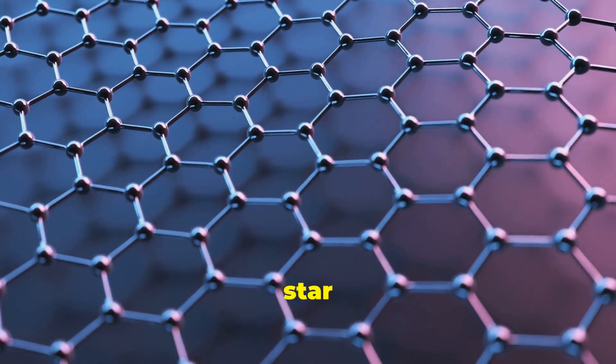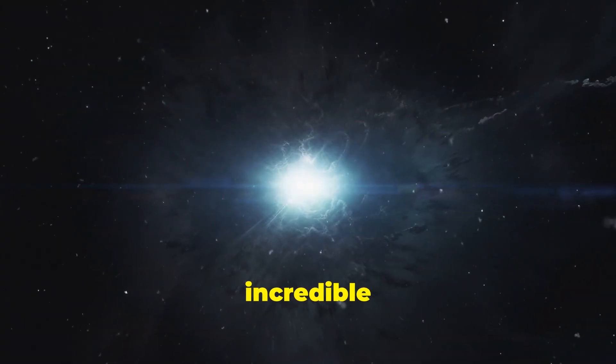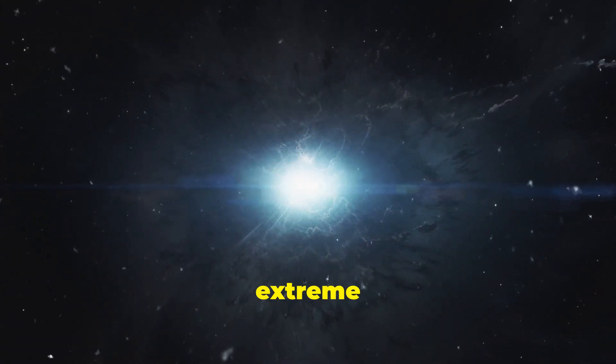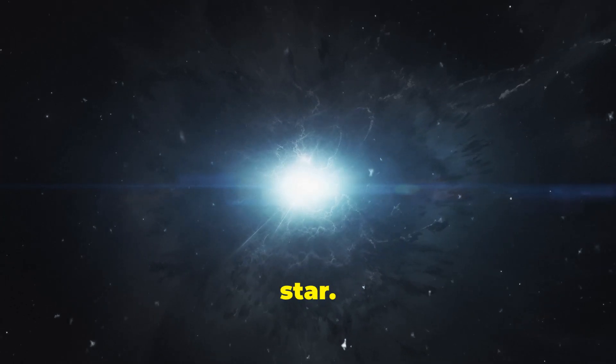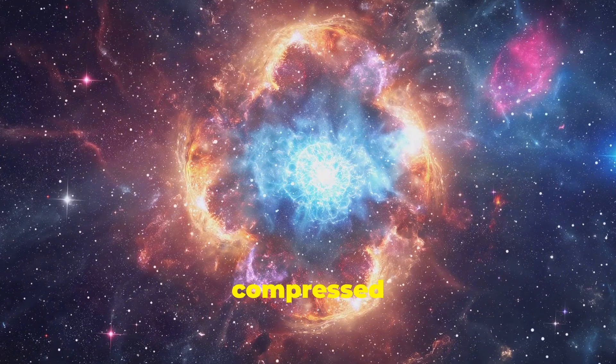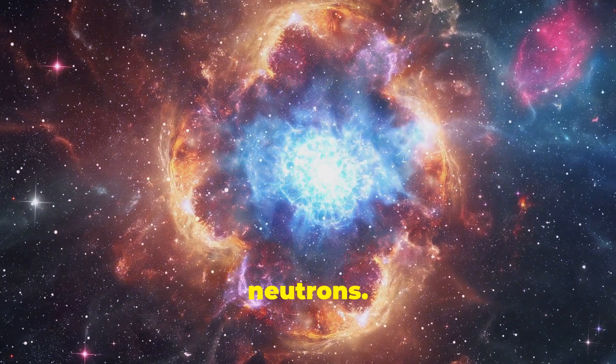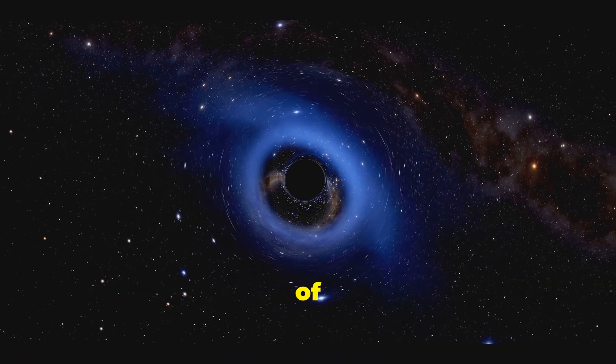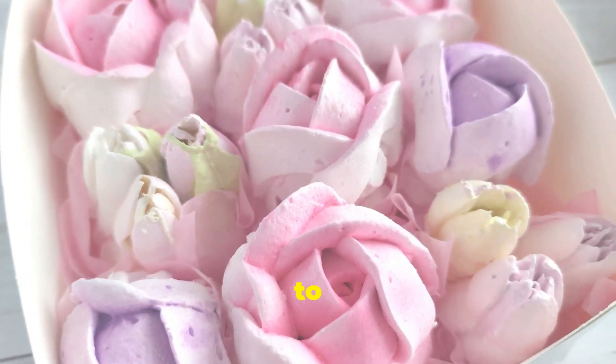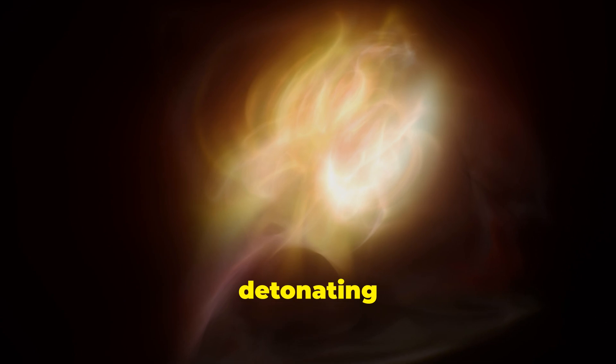The atoms inside a neutron star are squeezed together so tightly that there's practically no empty space left between them. This incredible density is a result of the extreme conditions found within a neutron star. When a massive star collapses, its core is compressed to the point where electrons are forced into protons creating neutrons. The gravitational pull of a neutron star is so strong that if you were to drop a marshmallow on its surface, the impact would be equivalent to detonating a nuclear bomb.